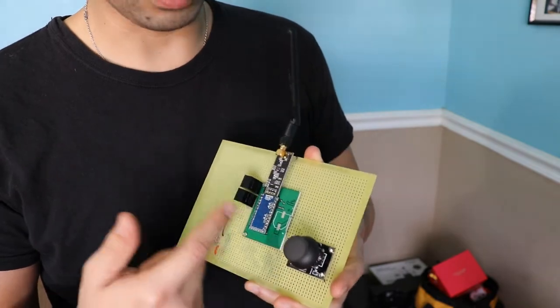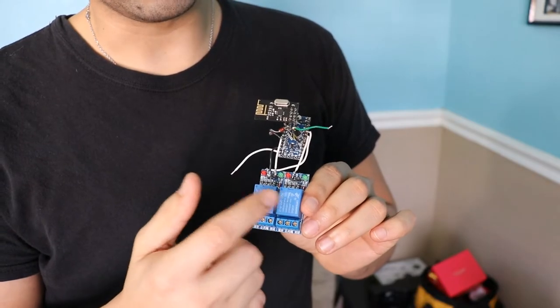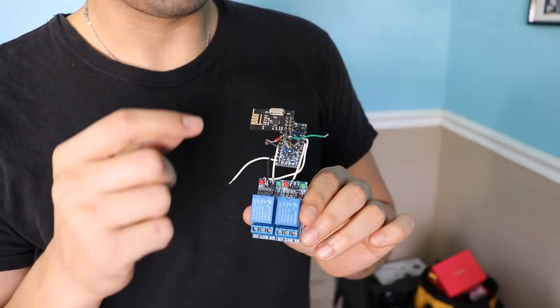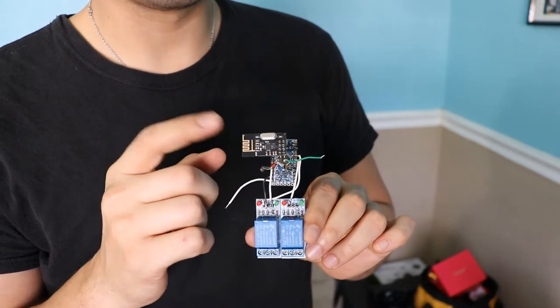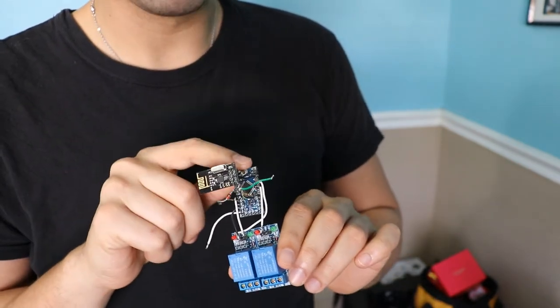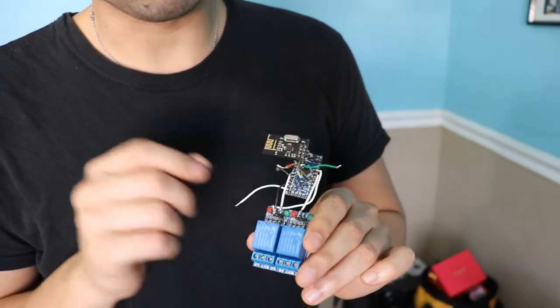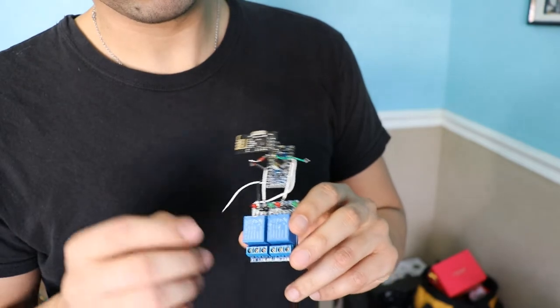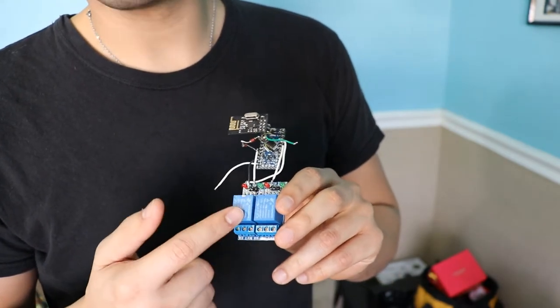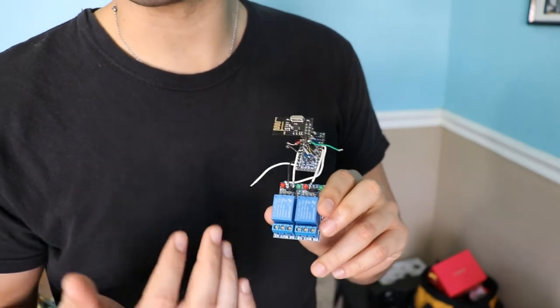This is the board that I had to cut that had already the footprint for the RF transceiver. This is two relays, your RF receiver and the Arduino here, Arduino Nano, and you have power and ground. Here I'm going to connect the motor and I'm going to make it spin either forwards or backwards.